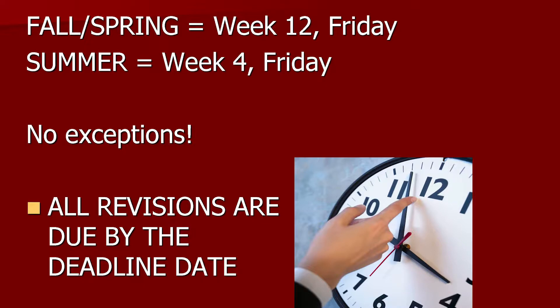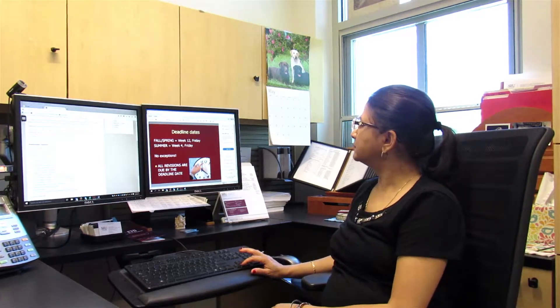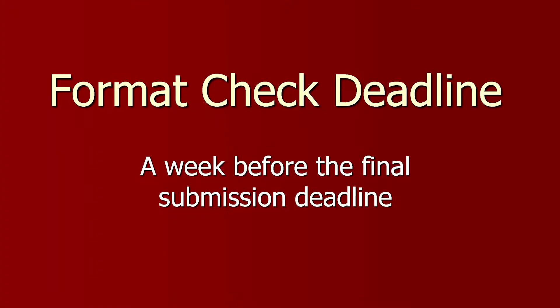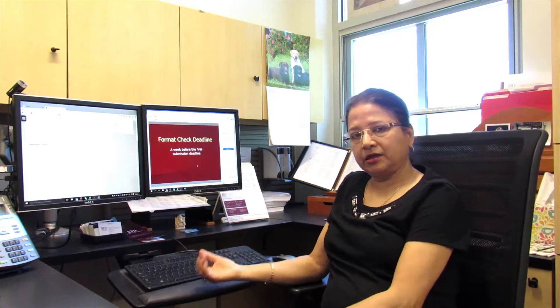Deadline dates: for fall and spring semesters, the deadline for final submission of your thesis or dissertation is always Friday of week 12. For summer, it is Friday of week 4 — no exceptions. All revisions are due by the deadline date at 3:00 PM, because the approver must approve all theses and dissertations by that day. There is also a format check deadline, which is one week before the final submission deadline, to give both the student and the approver more time to complete tasks.